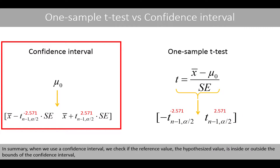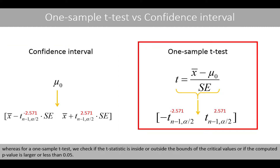In summary, when we use a confidence interval, we check if the reference or hypothesized value is inside or outside the bounds of the confidence interval. Whereas for a one-sample t-test, we check if the t-statistic is inside or outside the bounds of the critical values, or if the computed p-value is larger or less than 0.05.